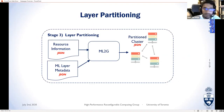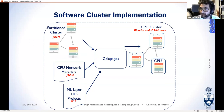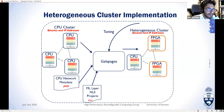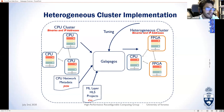Due to functional portability in Galapagos, you can first run the partitioned design on a CPU cluster and then seamlessly migrate pieces to FPGAs without changing any user code. If you're confident enough, you can jump straight to the FPGA cluster, or iteratively migrate. This is a new flow enabled specifically by Galapagos's functional portability, applicable here for machine learning but usable for any distributed application.